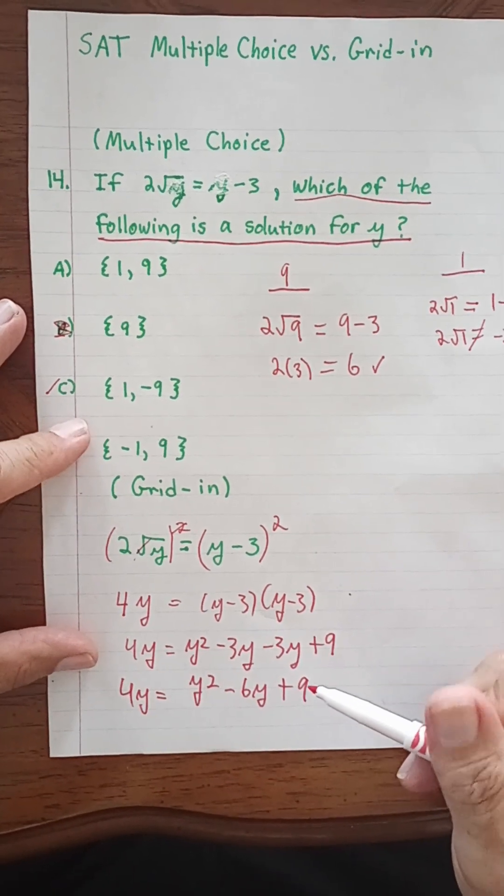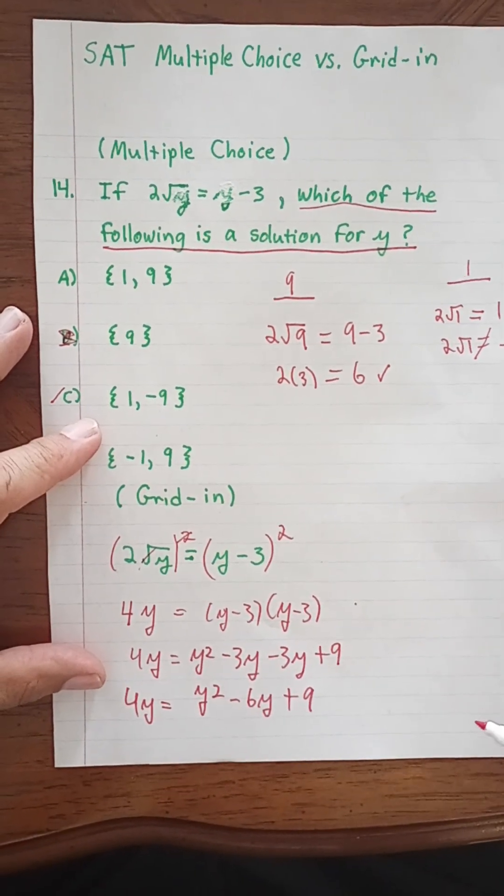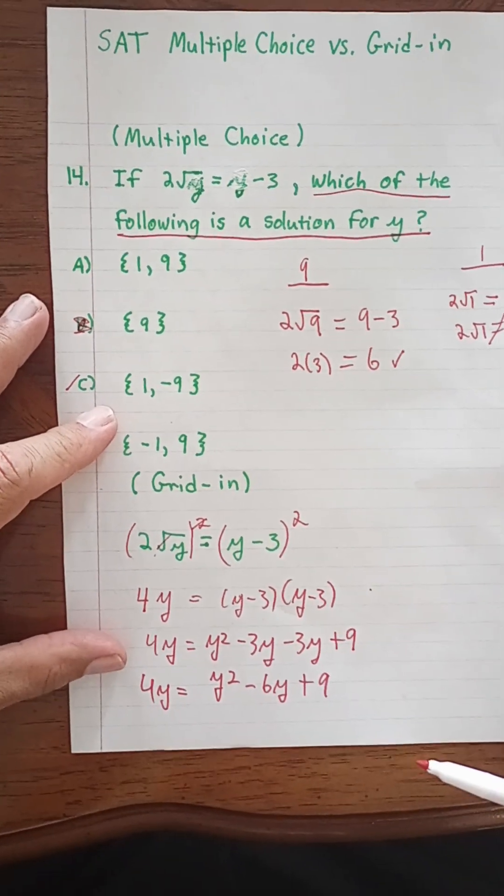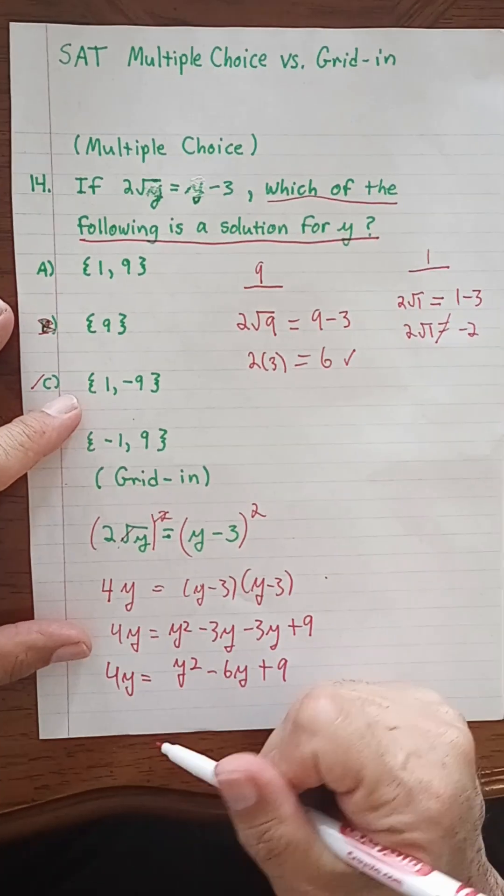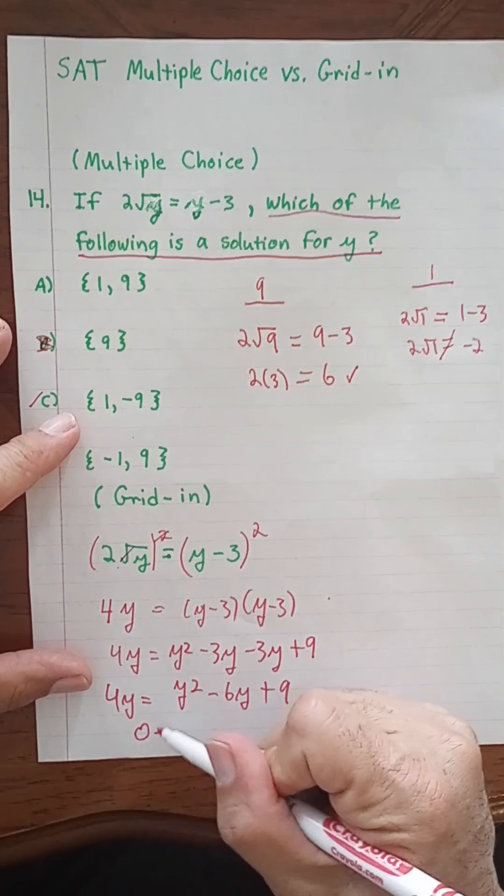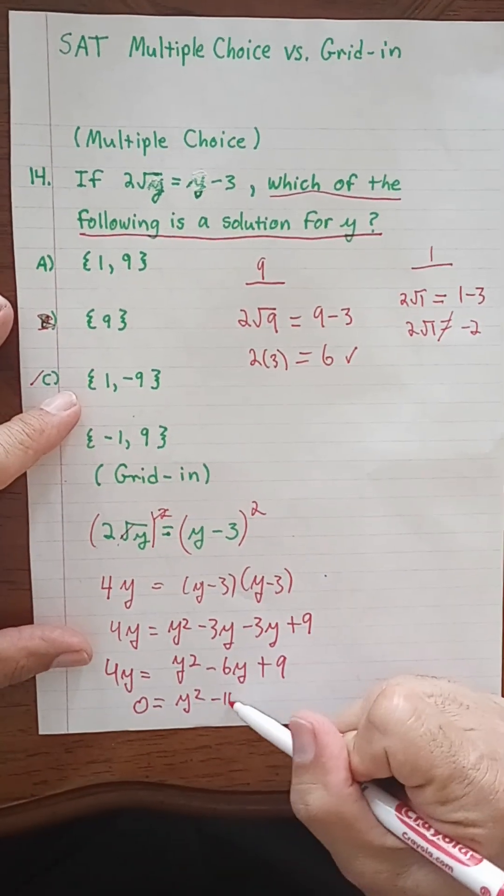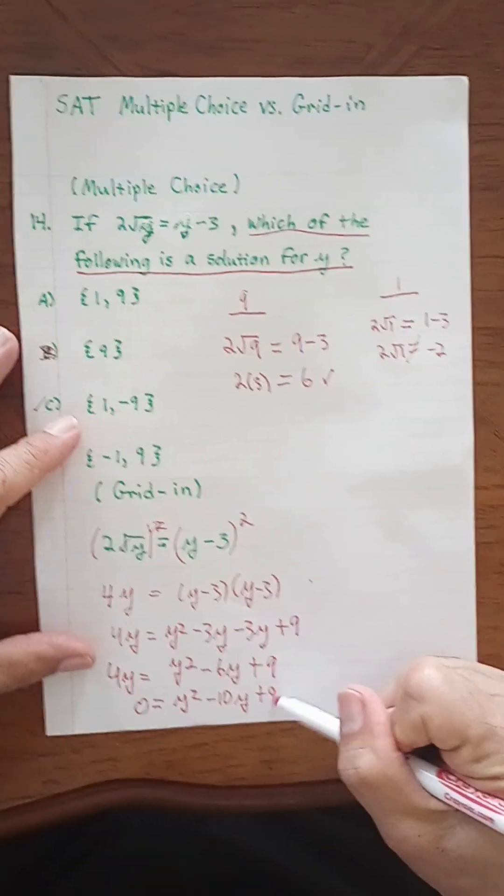And then we would set this equal to 0. We would do that by subtracting 4y from both sides. So this would be 0 equals y squared minus 10y plus 9.